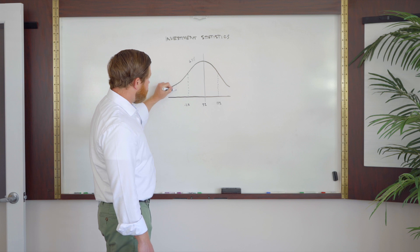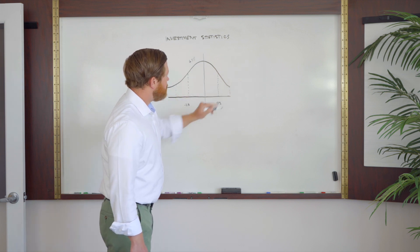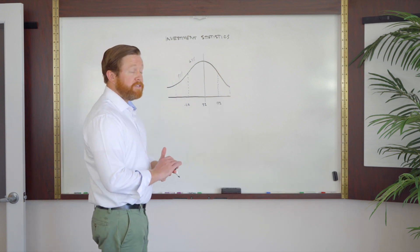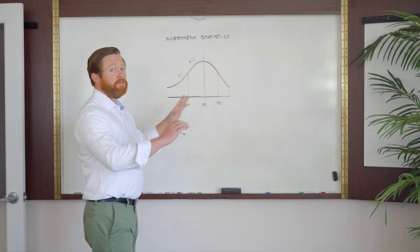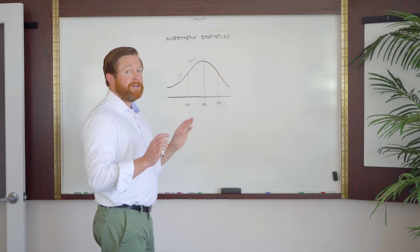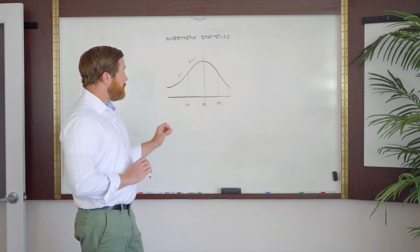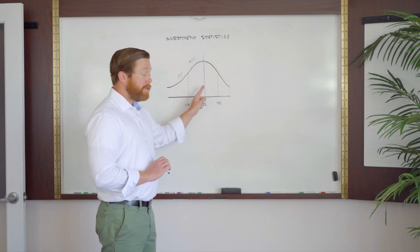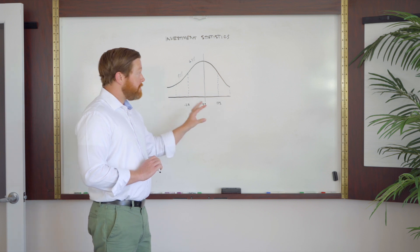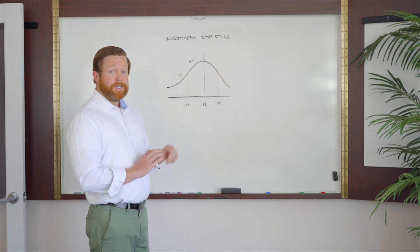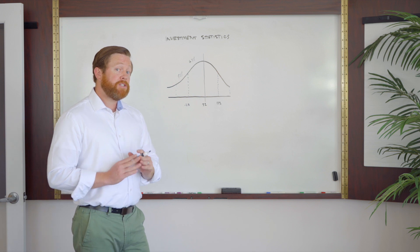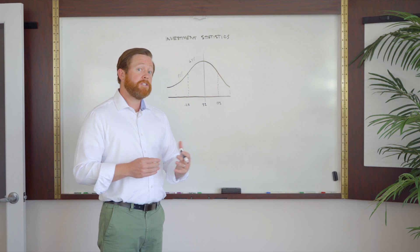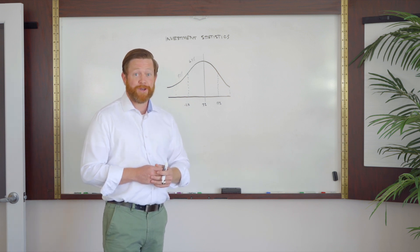We can go out to two standard deviations, and when we do that, 97% of our actual performance figures will fall within two standard deviations. Three goes out to 99.7%, et cetera. But the key thing we're going to focus on is: what is our mean, what is our average rate of return, and what is our standard deviation? This is kind of a middle-of-the-road bell curve. We're going to come back and compare it to two other types of bell curves to figure out what that could mean in terms of portfolio performance.